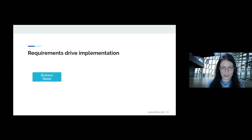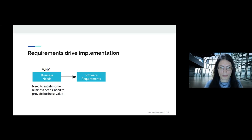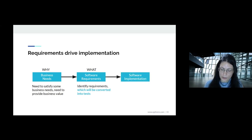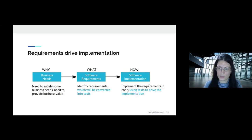Looking at the relationship between requirements and implementation: we start with business needs, convert them into software requirements, and those requirements are converted into tests — this is where the term 'executable specifications' comes in. The software we implement is our response to satisfying those requirements. We take requirements, put them in executable form as tests, and then use tests to drive the implementation.